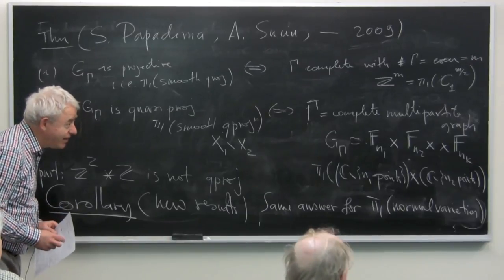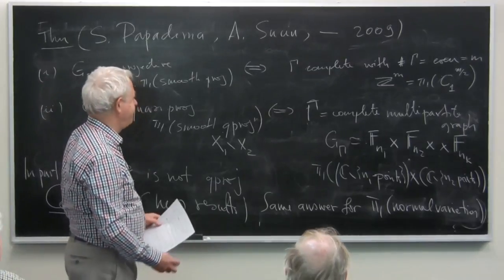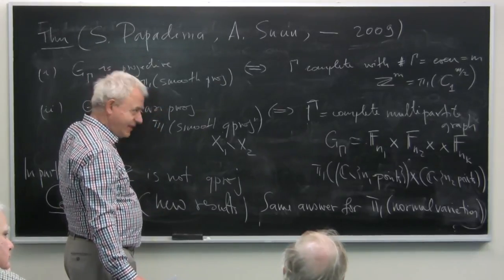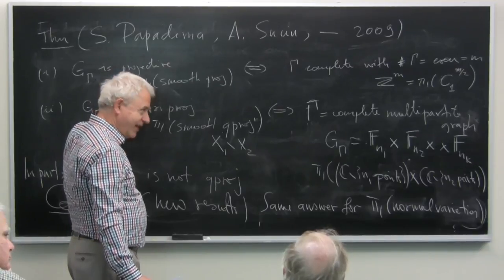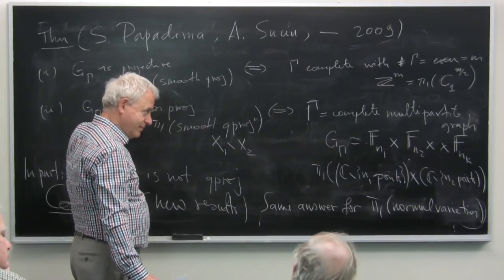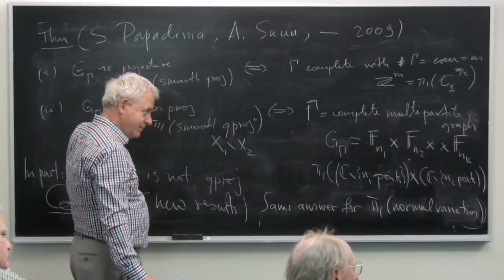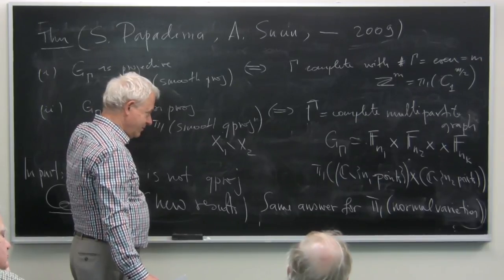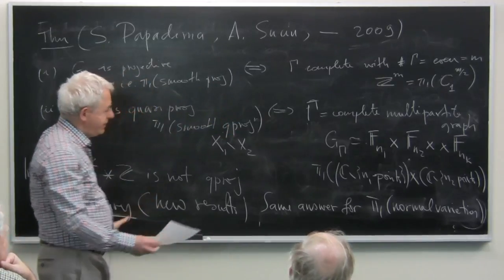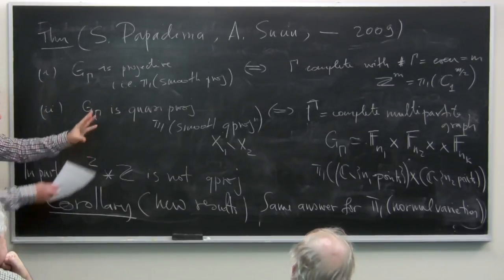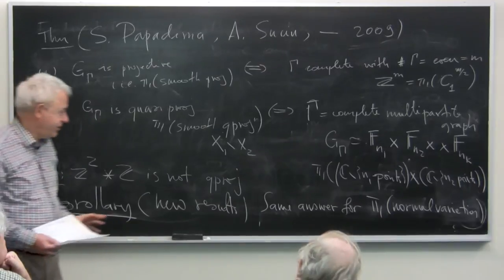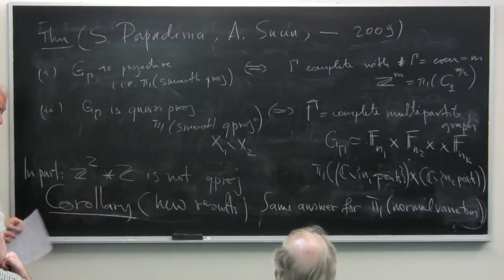This new result is joint work in progress with Donu Arapura and Richard Hain. We are actively seeking an example of a fundamental group which is a fundamental group of a normal variety but not of a smooth variety. For the moment, we have asked around and nobody knows such an example. We expect that they exist — we have found some properties which differ for fundamental groups of normal versus smooth varieties — but we are not really able to show that these two classes are distinct. Within the class of right-angle Artin groups, the fundamental groups coincide for normal and smooth varieties.